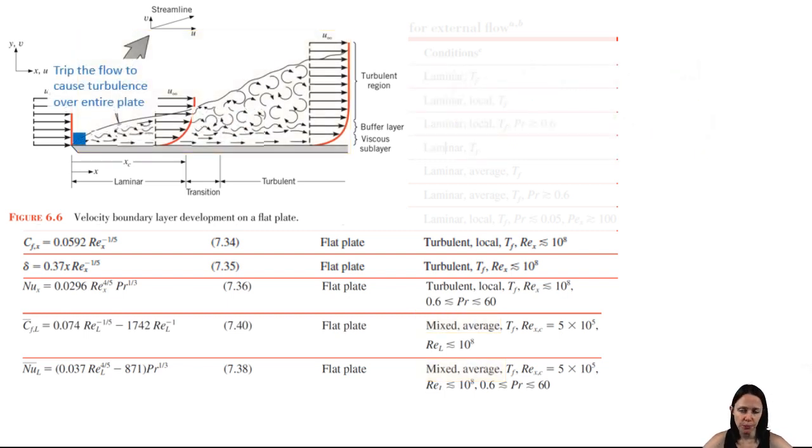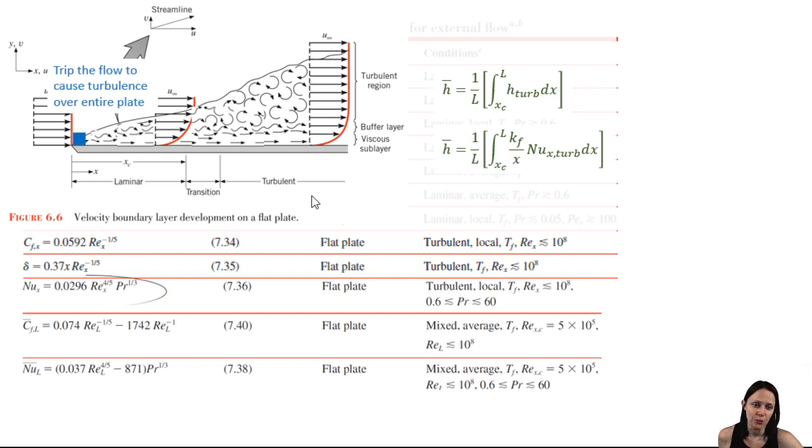We could trip the flow at the leading edge using a fine wire or some other turbulence promoter and cause turbulence over the entire plate. And in such a case, there would be no mixed flow. So to find the average heat transfer coefficient over the plate, we have to integrate over the plate. But we only have to integrate using the local H value here, which is for turbulent flow. And we can get that in terms of the local Nusselt number. And then we just use the local Nusselt number here.